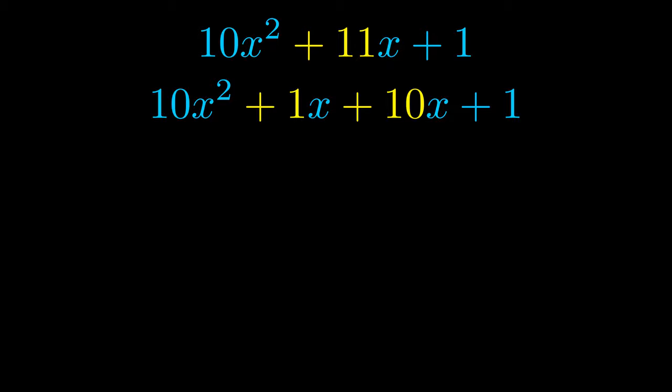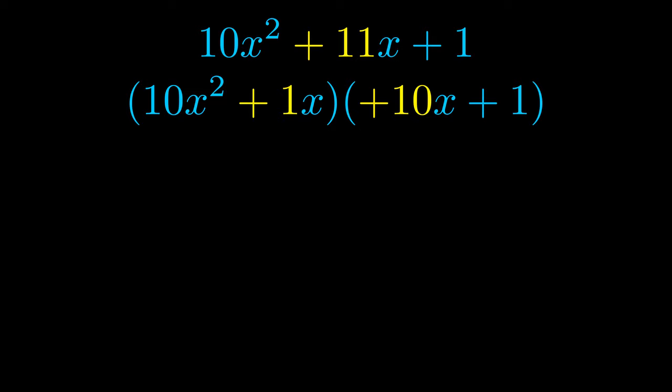Once we've done this we go ahead and put parentheses around the first term and the last term and we do that so that we can take the greatest common factor out of both terms. We can see the greatest common factor is now outside in green.